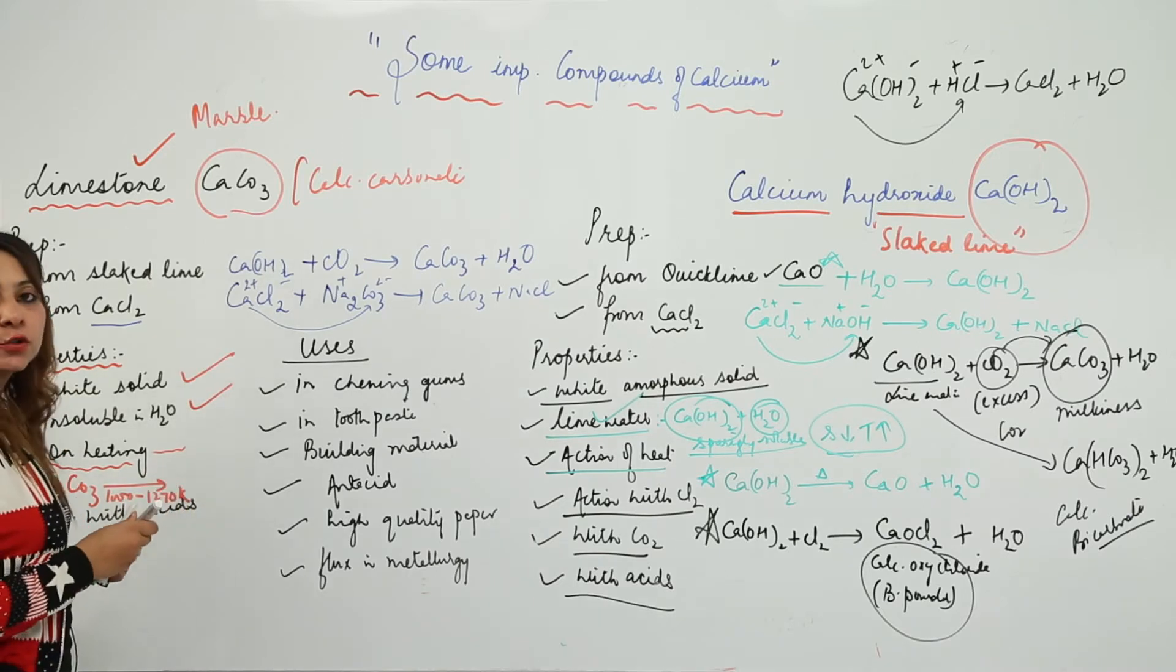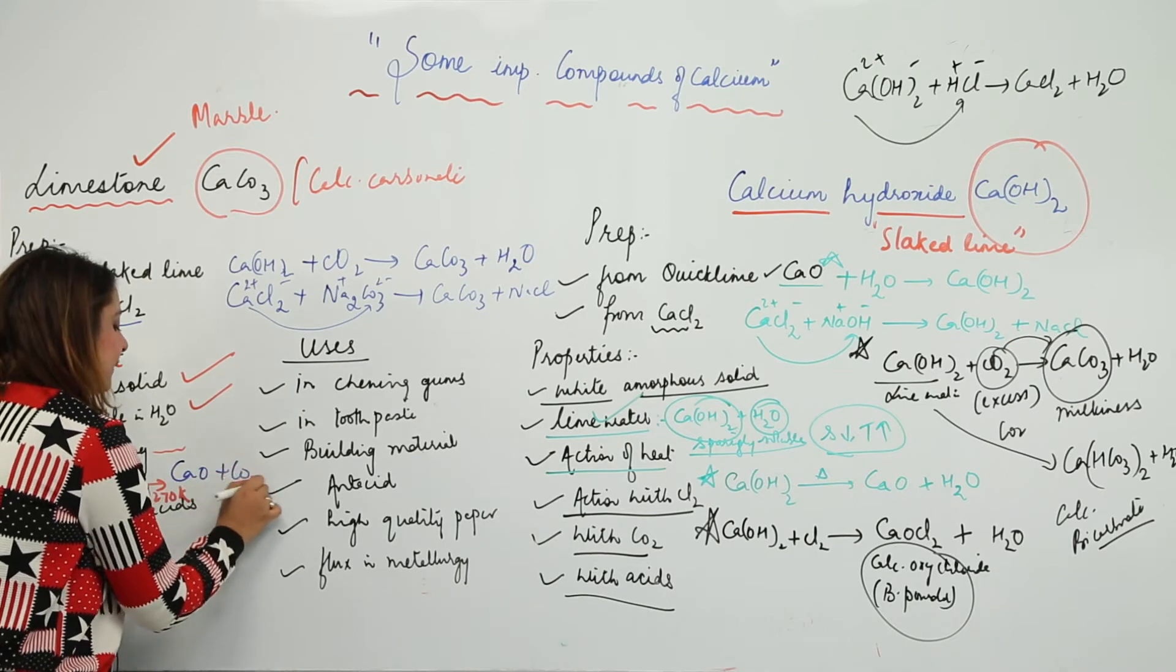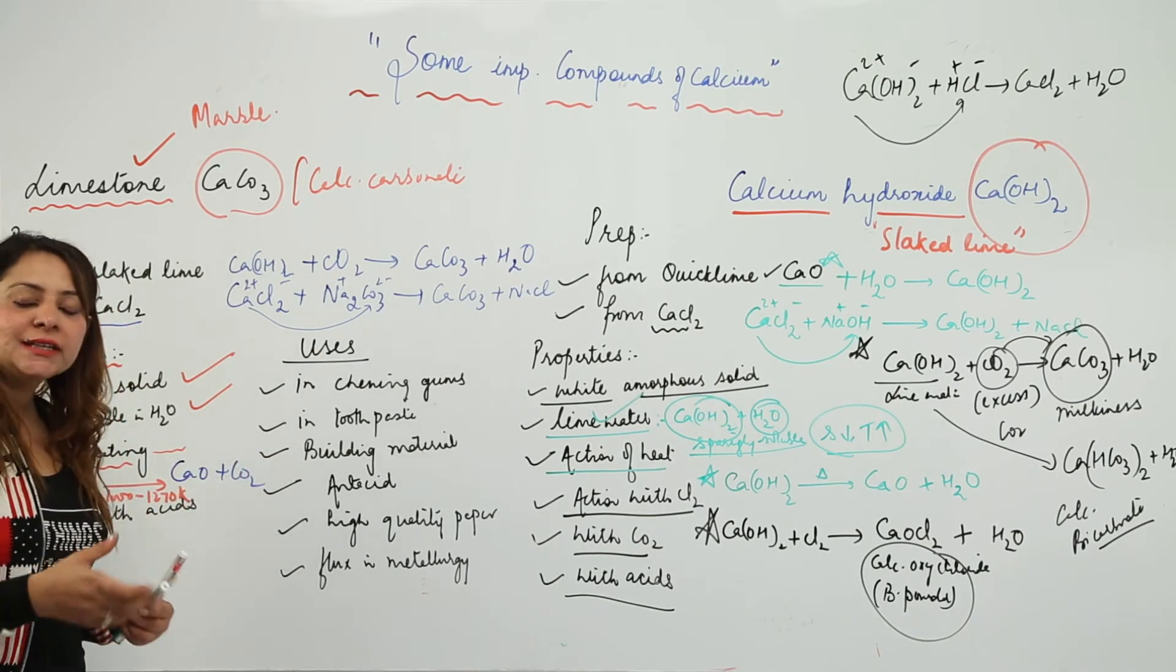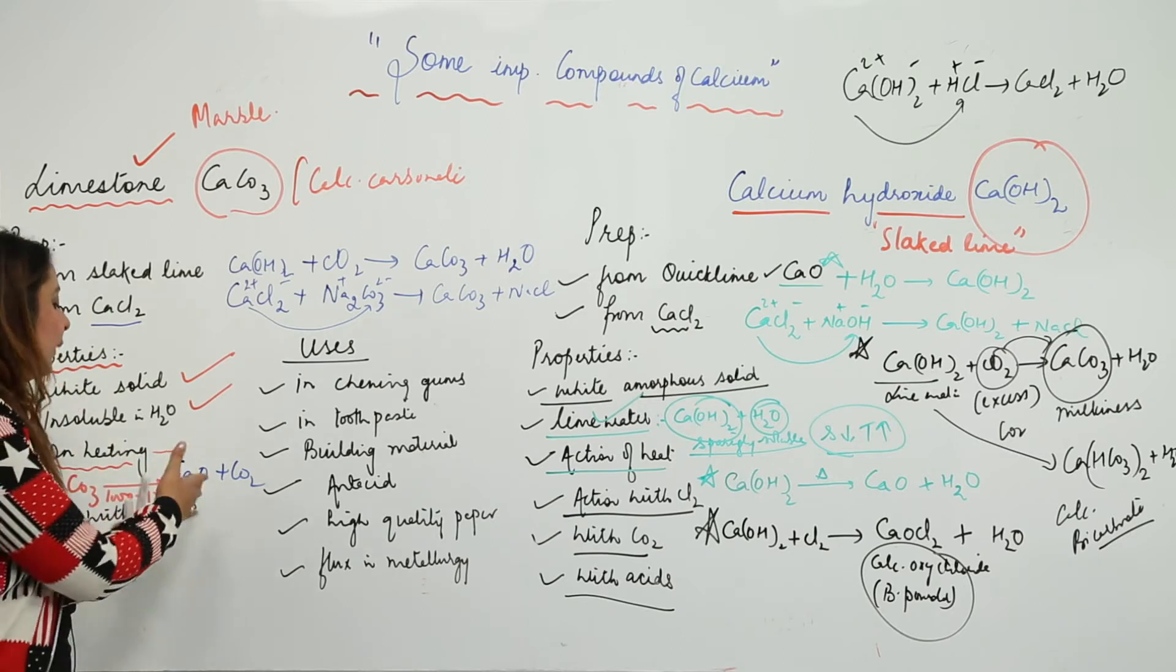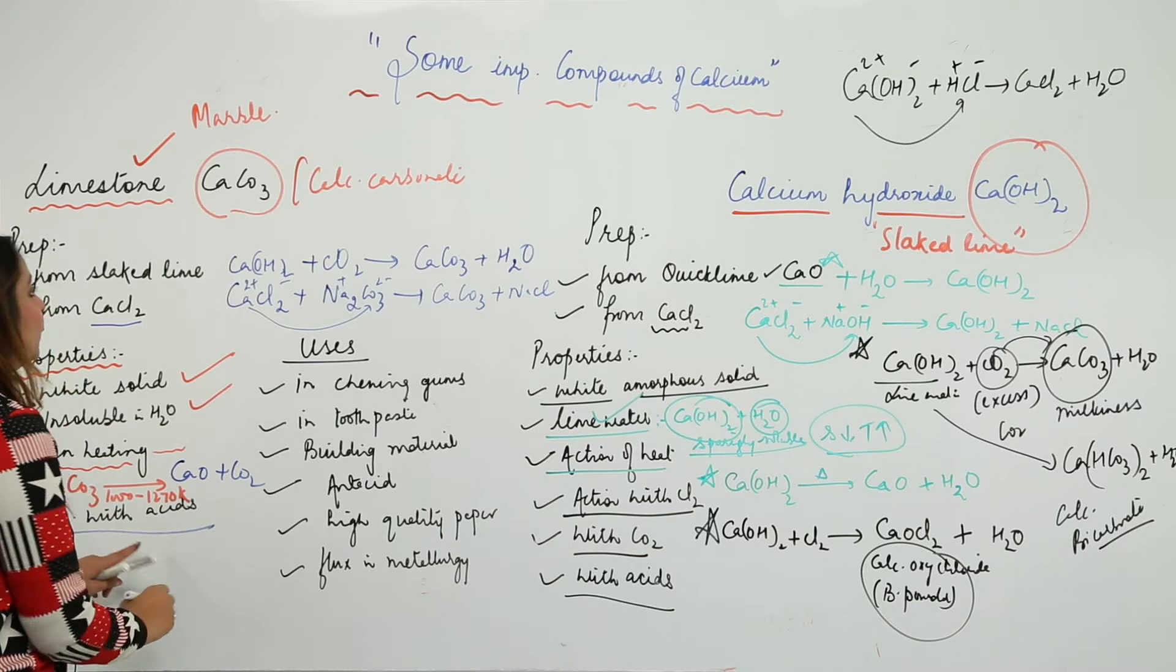You have calcium carbonate, so when you heat it in a temperature range of 1000 to 1270 Kelvin, it actually gets decomposed forming lime and carbon dioxide. When you heat it under the suitable range, you get lime, that is calcium oxide, with carbon dioxide.